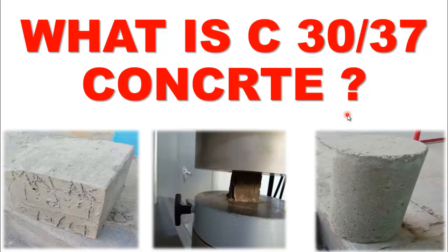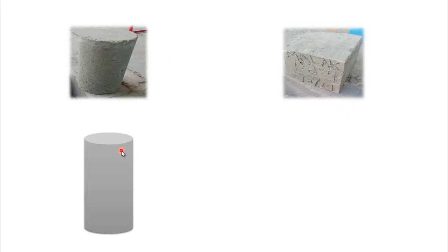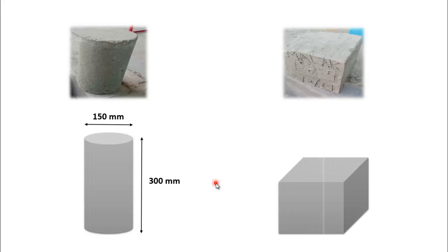Let's start today's discussion. We know that to determine the compressive or crushing strength of concrete in the laboratory, we use a concrete cylinder or concrete cube for testing. The dimensions of the concrete cylinder are: height 300 millimeters and diameter 150 millimeters. The dimensions of the cube are 150mm × 150mm × 150mm.